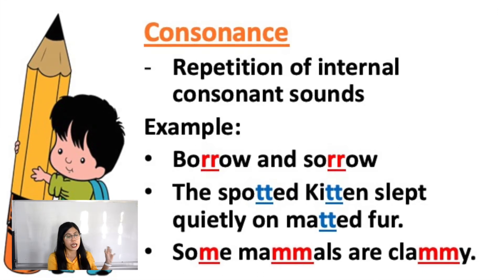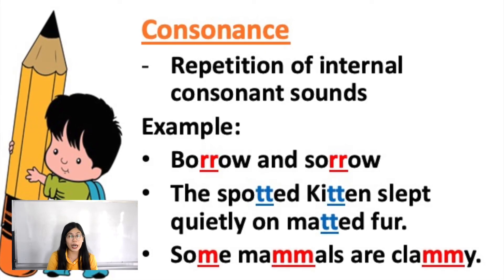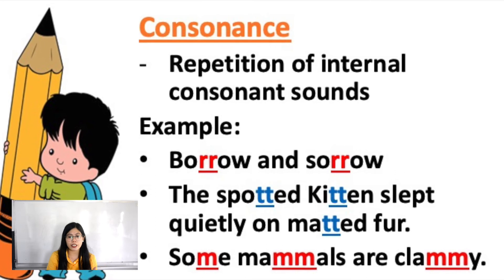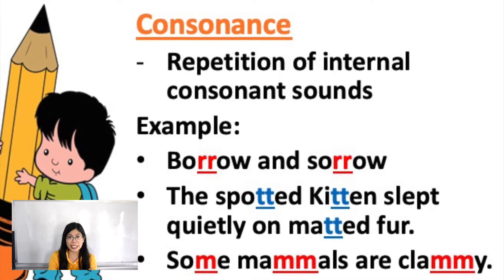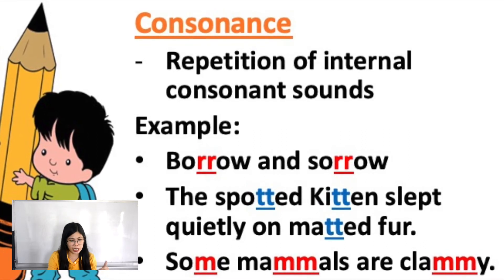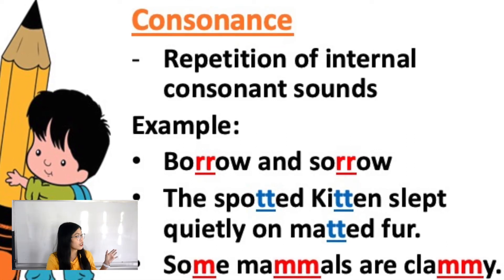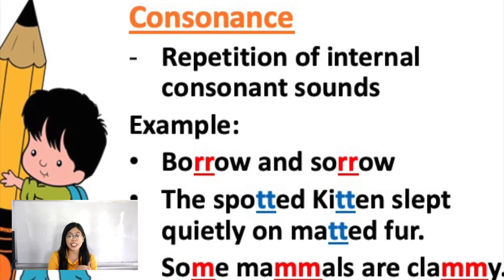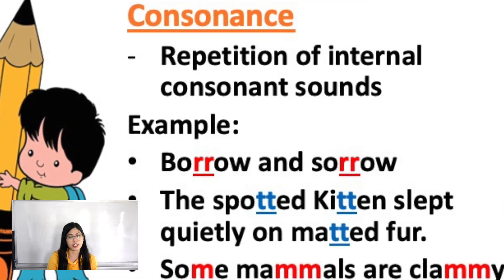As you can see in our example, another example: 'The spotted kitten slept quietly when matted for.' Here, the consonant letters double-T are repeated in the middle of the words 'spotted,' 'kitten,' and 'matted.' Next: 'song mammals' or 'clammy' — the consonant letters M and M are repeated in the middle of 'mammals' and 'clammy.' So those are examples of consonance.